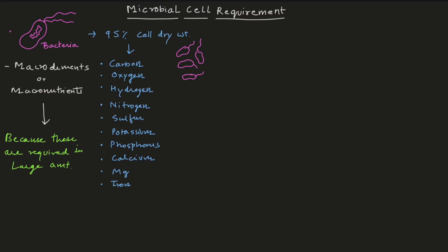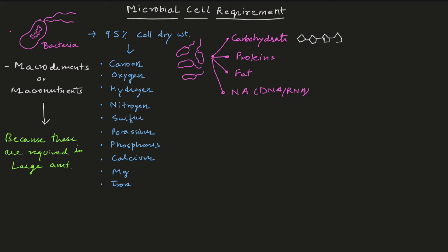In a bacterial cell there are four major chemical compounds: carbohydrates, proteins, fats, and nucleic acids. Within nucleic acids you have DNA, RNA, and polymers. For these four essential polymeric compounds, there are specific macronutrients or macro elements associated with each of them.